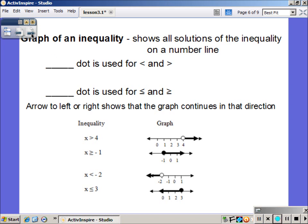We use an open dot for less than and greater than, no or equal to. We're not allowed to use that particular value as a solution. So we use an open dot to signify we can get really close to that number, but never actually use it as a solution. A closed dot will signify that we are allowed to use that number as one of our values that has the or equal to.